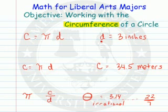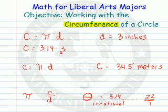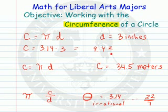Suppose I know the diameter of my circle is 3 inches. How big is the circumference? Well, I would take the circumference, which is equal to — we'll use 3.14 here — times the diameter, which is 3. Multiply these together and we're going to get 9.42, and the label would be inches, because it's a length, a distance.